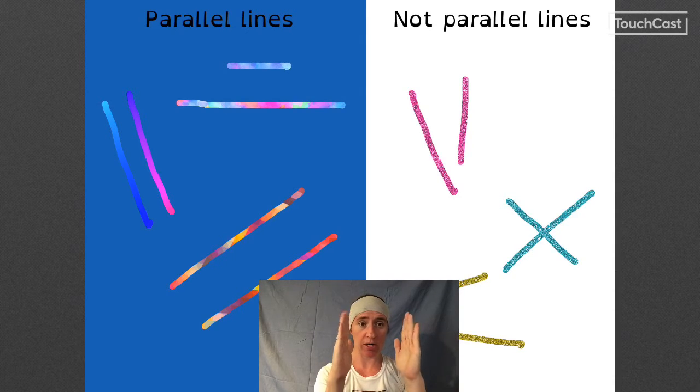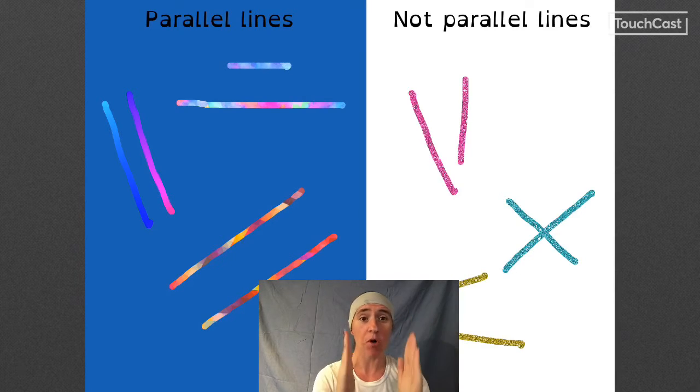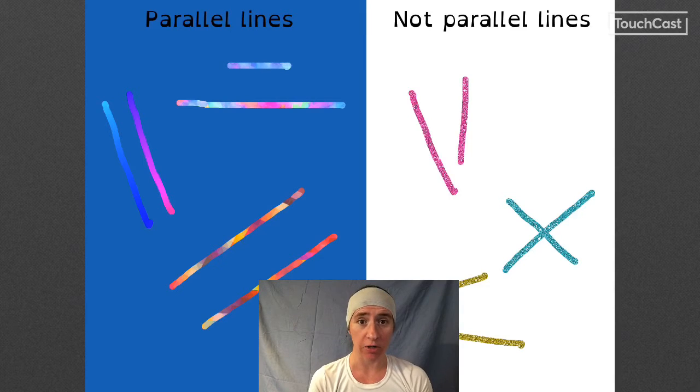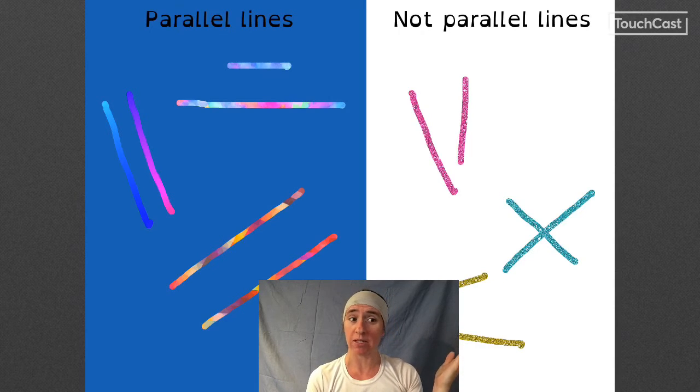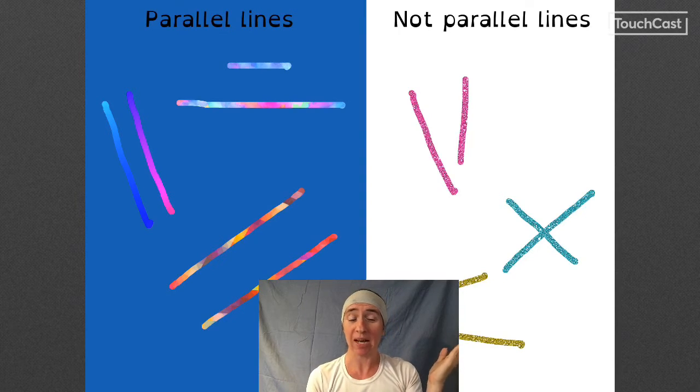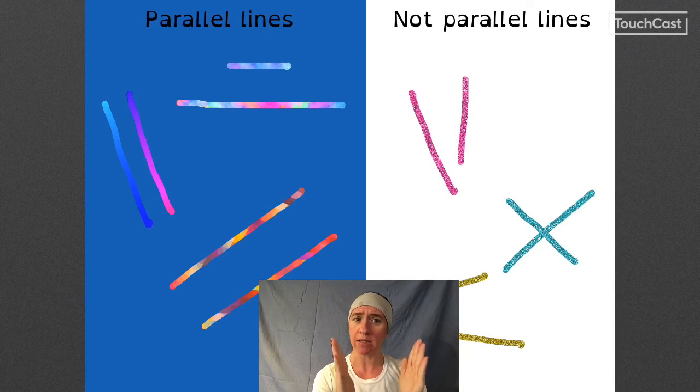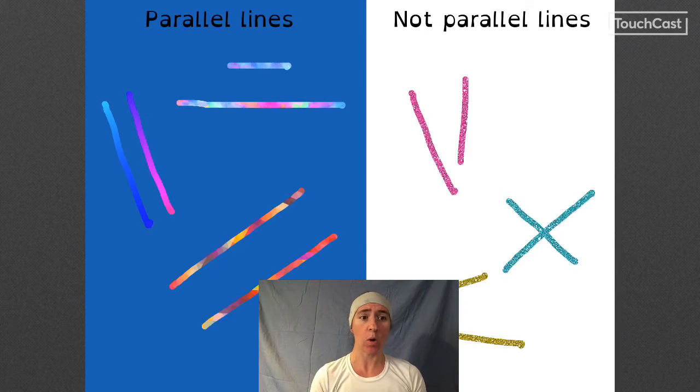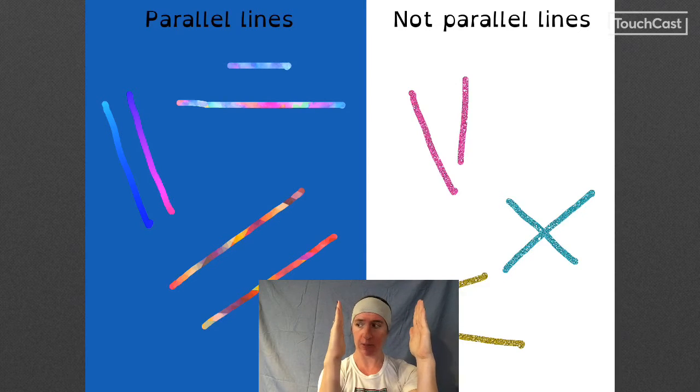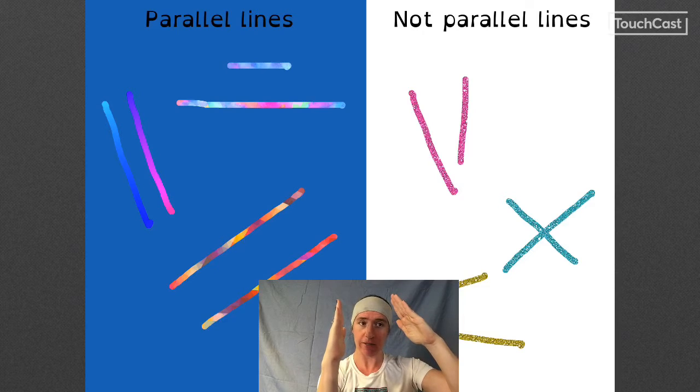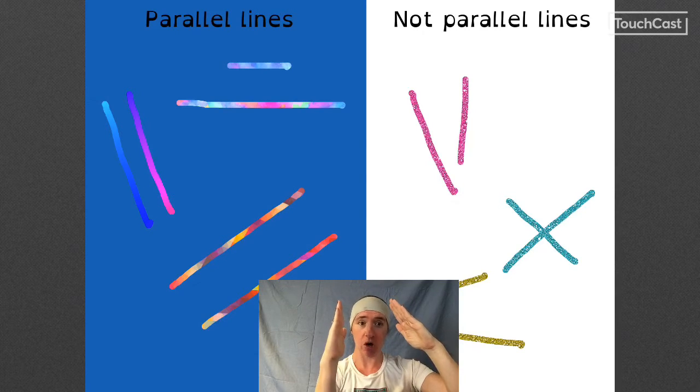If they're two inches apart here, they're gonna be two inches apart down here and if they go on forever they will never cross. They'll never intersect. The ones on this side are not parallel lines because either they are crossing or they would cross if they got longer. So parallel: same distance apart every time. Not parallel: different distance apart at different points on the lines.